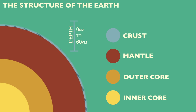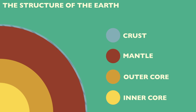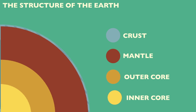Finally, resting on top of the mantle is the crust, composed of solid rock. The crust is the outer layer of the Earth's surface, between 0 and 60 kilometers deep. It is the thinnest of all the layers in terms of depth.